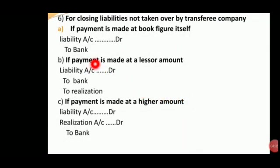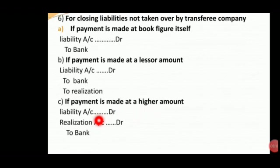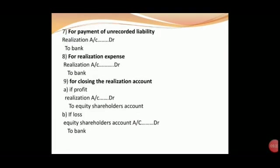If payment is made at the book figure itself, the liability account debit, to Bank. This will be the liability account debit to Bank. If payment is made at a higher amount, liability account debit, Realization Account debit, to Bank. Then for payment of unrecorded liability, Realization Account debit, to Bank.